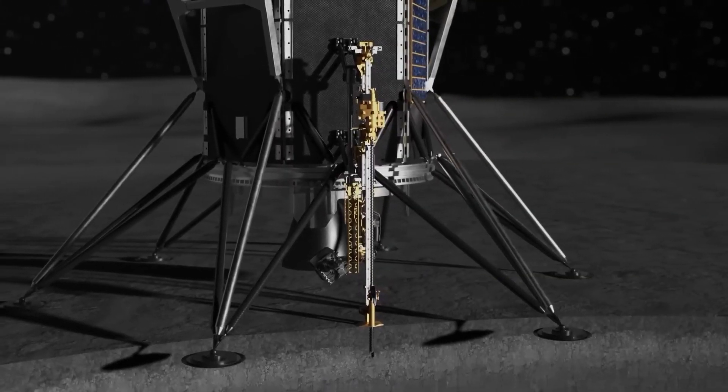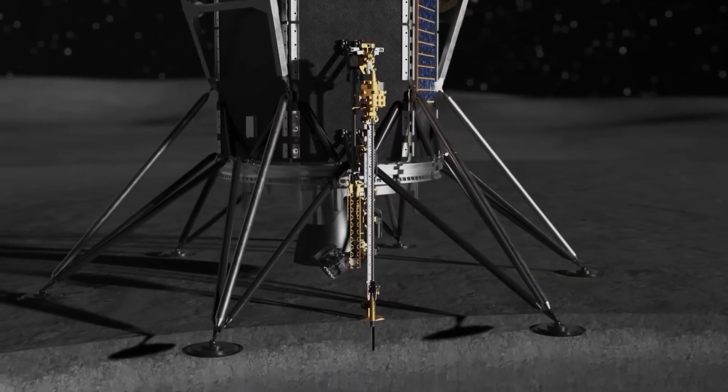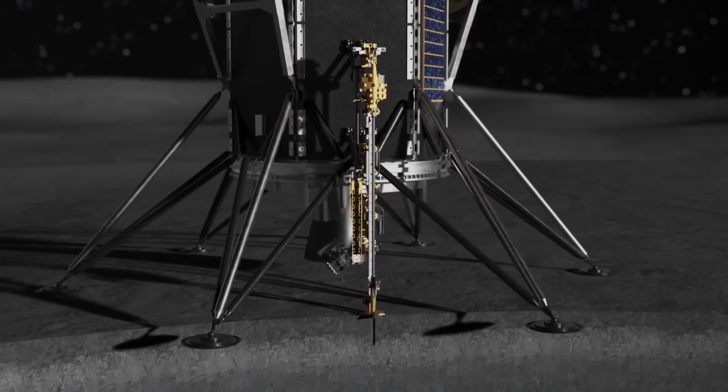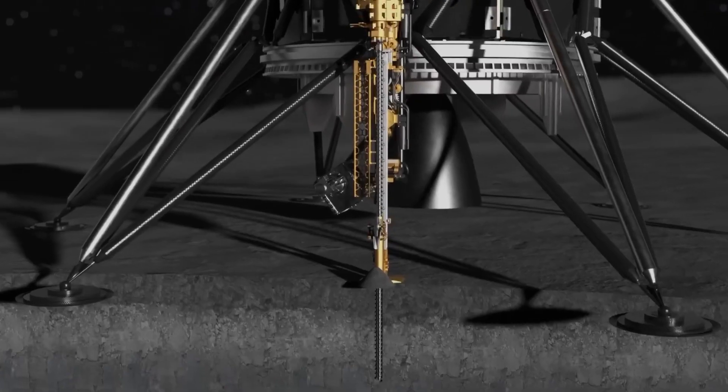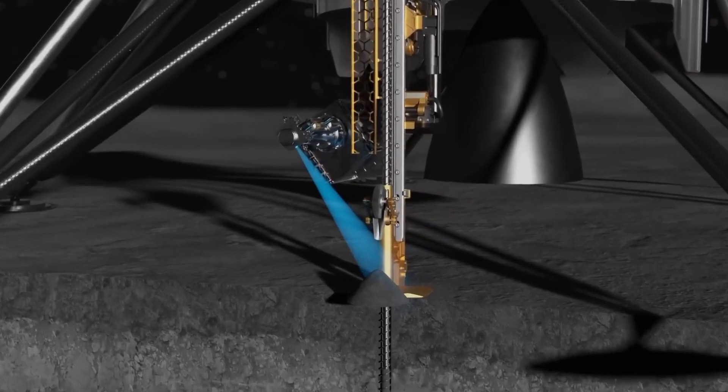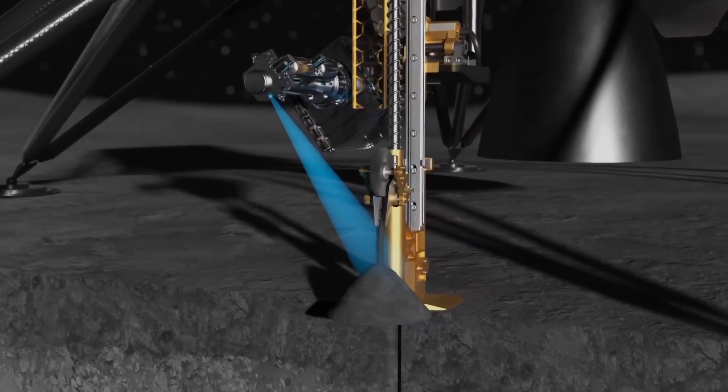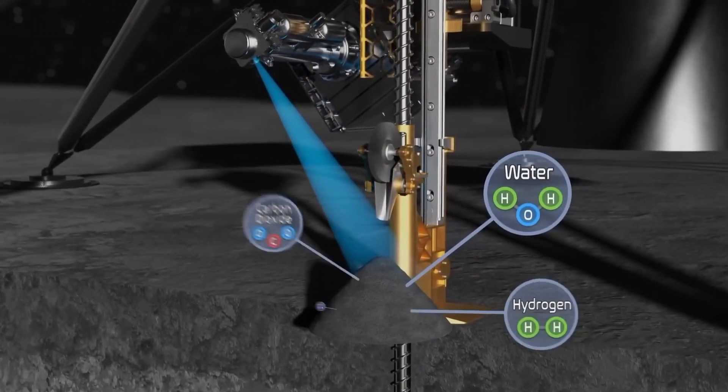Triton will drill into the lunar surface, taking one small bite deeper into the soil at a time and bringing that sample up and depositing it on the lunar surface. MSOLO will then evaluate those samples as they arrive on the surface to identify and measure the composition of water and other volatiles emanating from the samples.